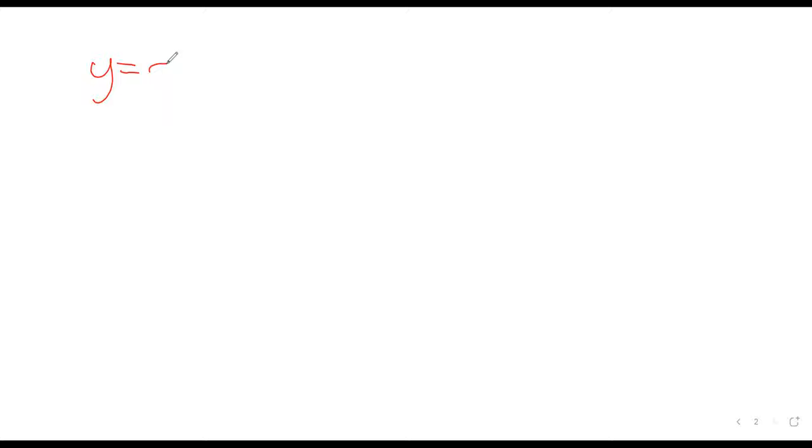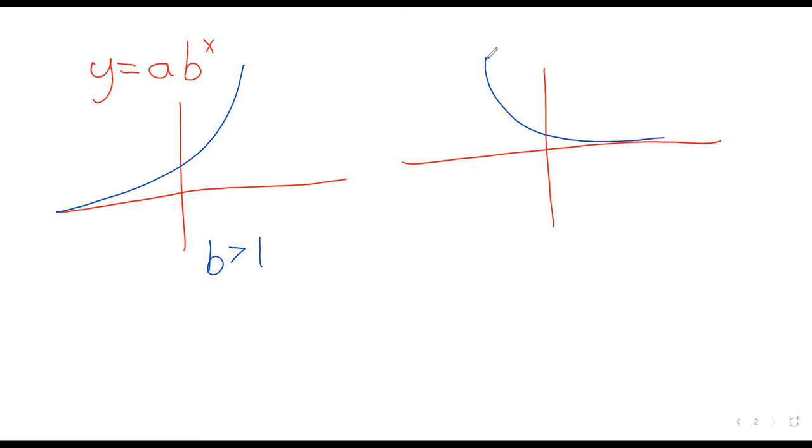If I were to summarize those graphs: y equals a times b to the power of x. The graph looks either like this if b is greater than one, or it looks like that if b is less than one.